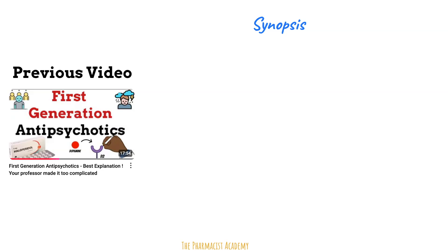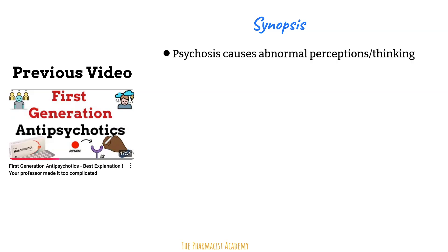I may be using the terms psychosis and schizophrenia interchangeably in this video, but don't get too caught up with that. In general, psychosis causes patients to have abnormal perceptions and thinking and lose touch with reality. How these patients present can be divided into positive and negative symptoms. Examples of positive symptoms are hallucinations and delusions, and negative symptoms include anhedonia — the person may not seem to enjoy the things they used to enjoy anymore — and asociality, which includes a lack of social drive or an increased desire to spend time alone.